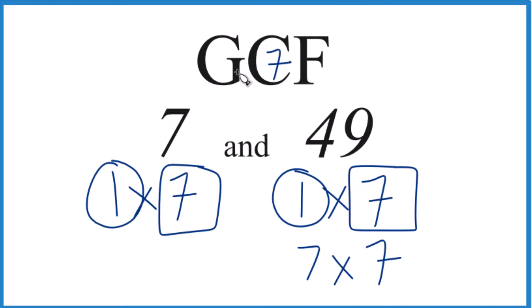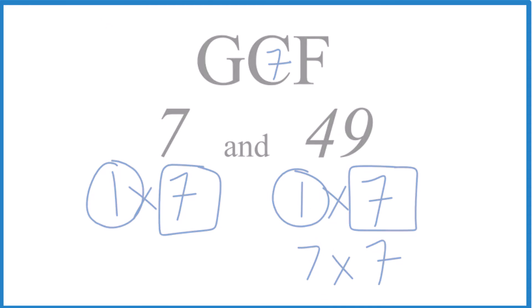So in answer to our question, the GCF for 7 and 49 is 7. You could do this with prime factorization, but for numbers this small, this is pretty easy. This is Dr. V, thanks for watching.